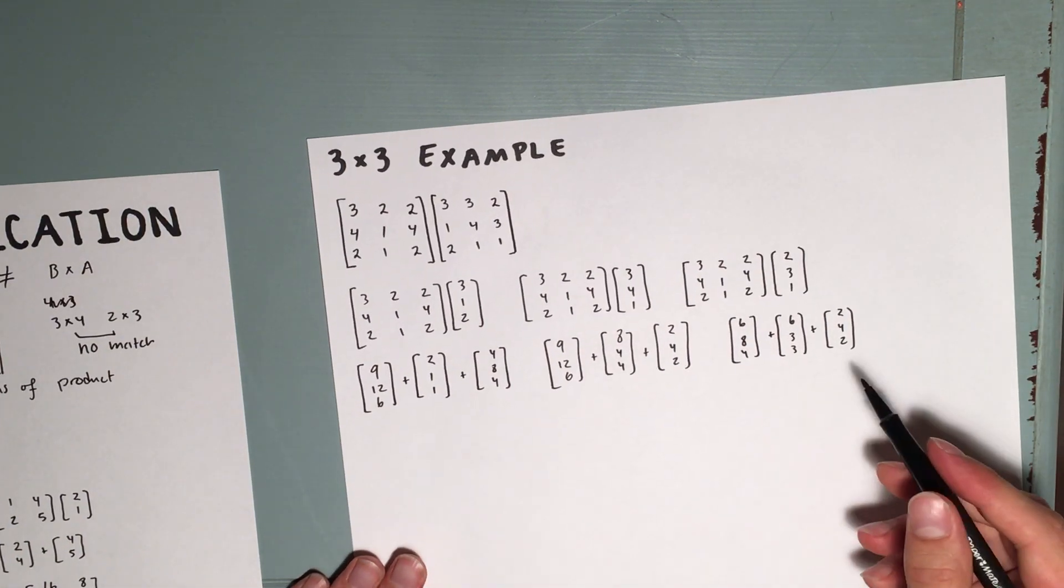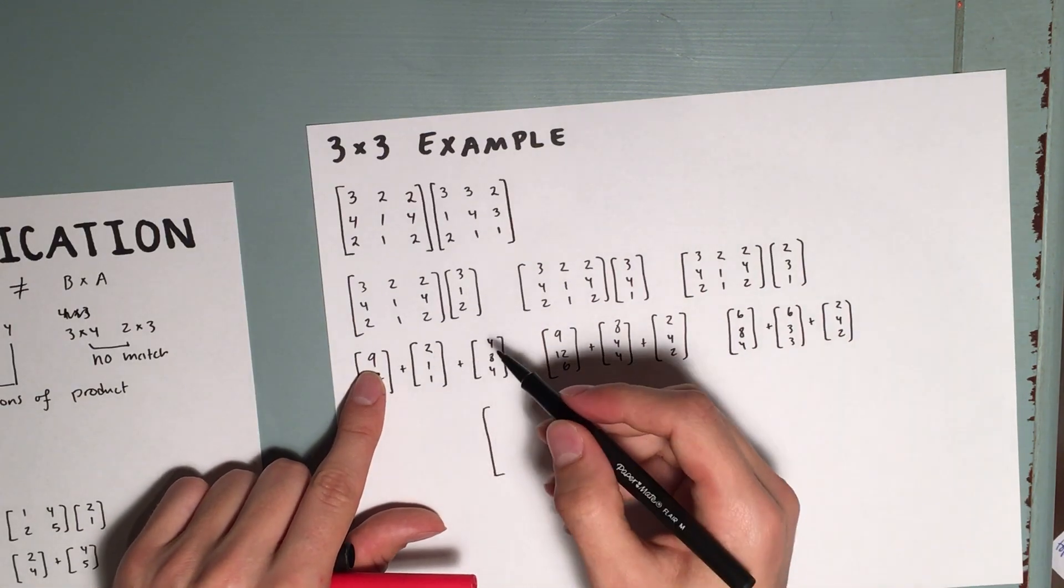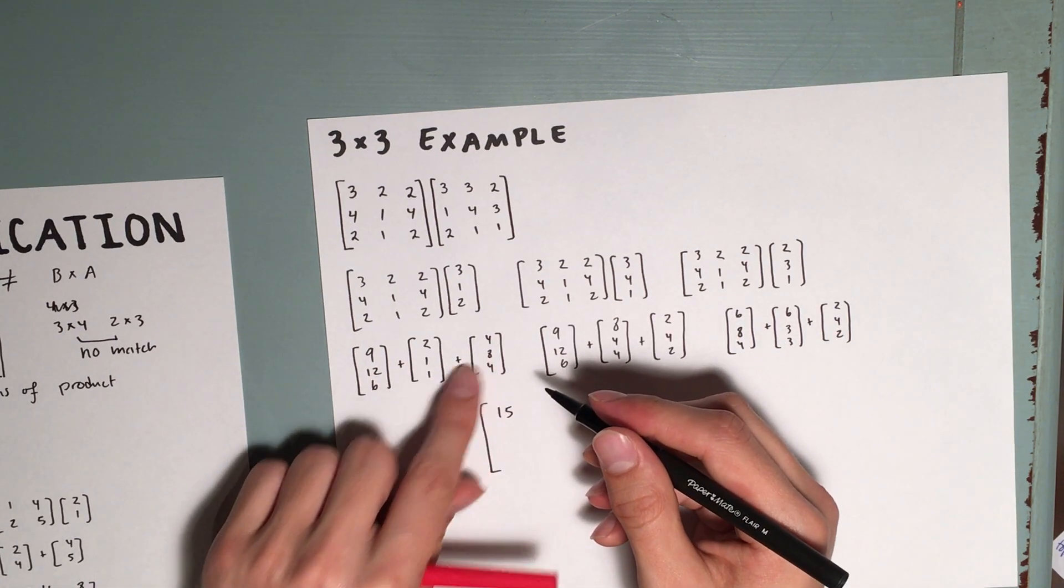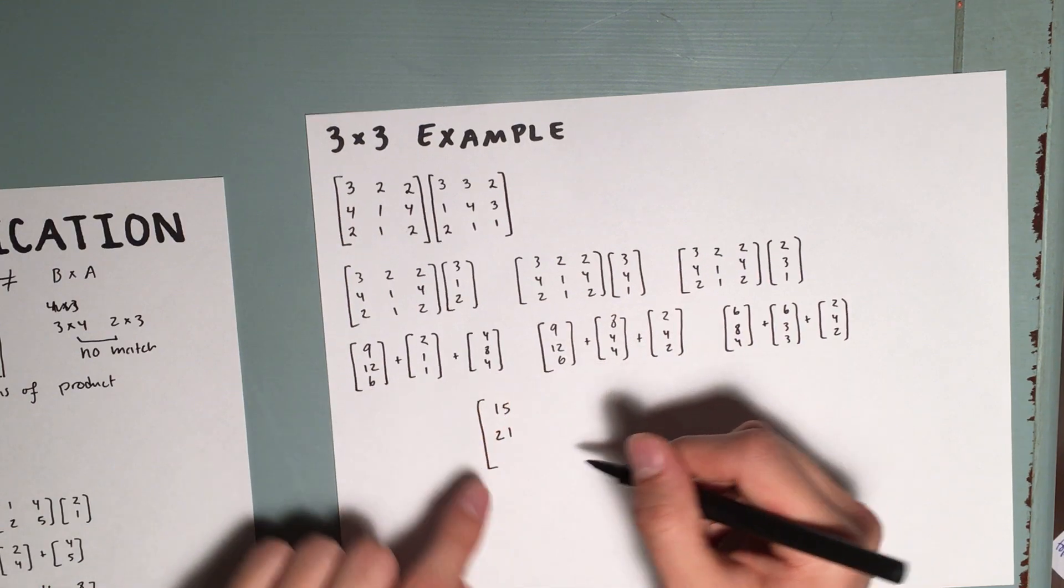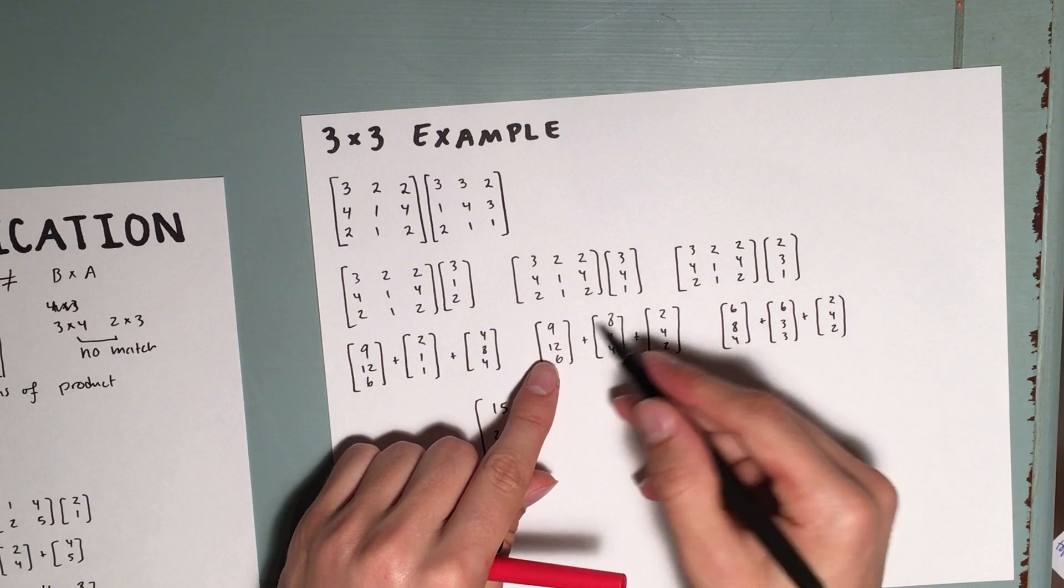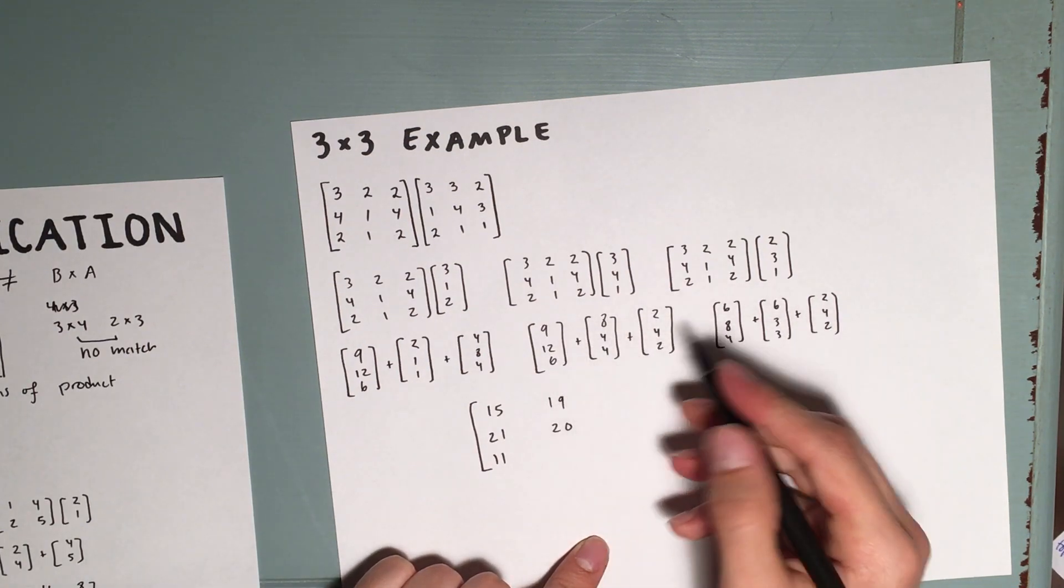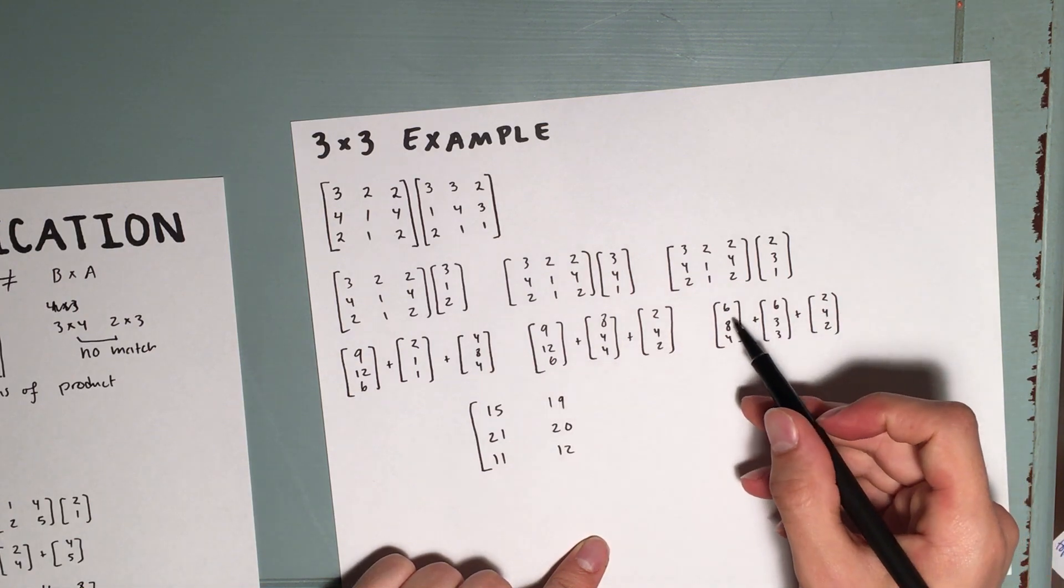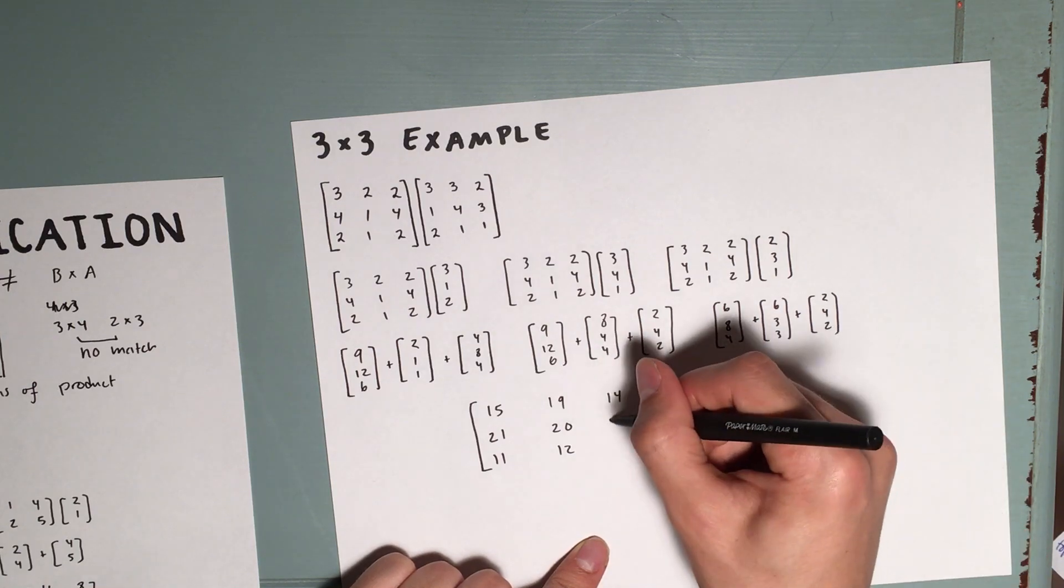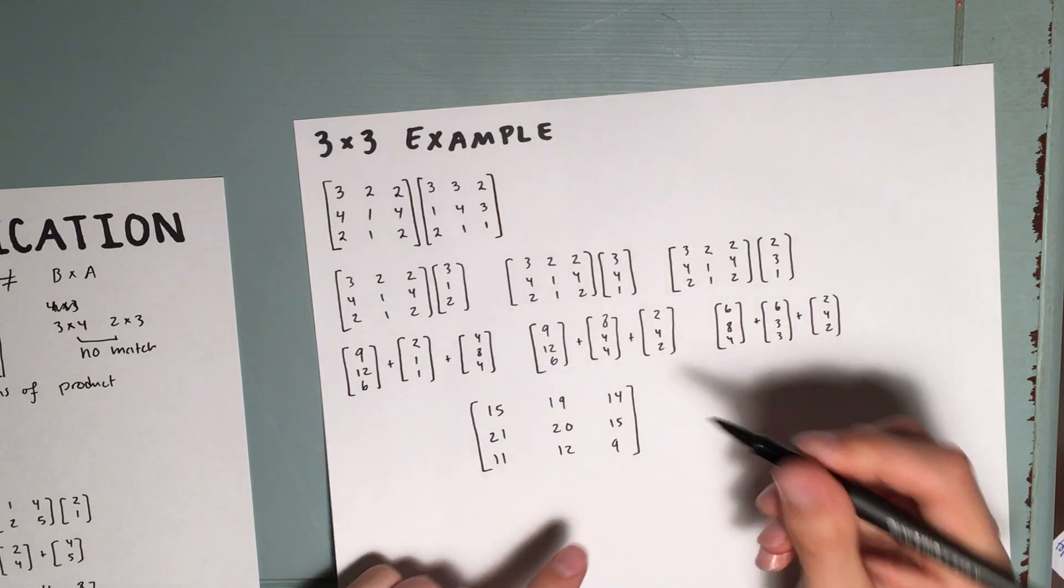Now, from this, I'm just going to write the final matrix, since I don't want to take up too much of your time. But we're going to have 9 plus 2 plus 4, which is just 11 plus 4, or 15. 12 plus 1 plus 8, which is 21. 6 plus 4 plus 1, which is 11. For the second column, we're going to have 10 plus 9, which is 19. 12 plus 8, which is 20. 6 plus 4 plus 2, which is 12. And for the final column, we have 14. 8 plus 3 plus 4 is 12 plus 3, 15. And 4 plus 3 plus 2 is 9. That should be our final answer.